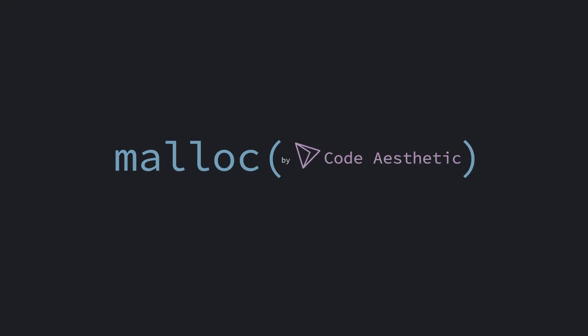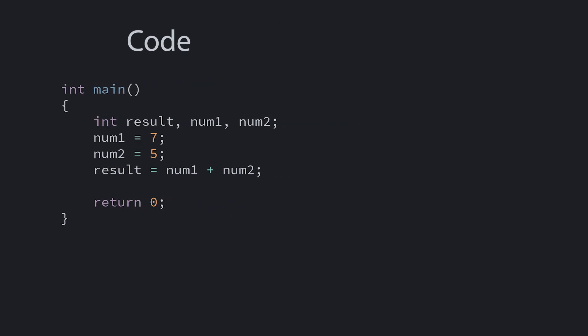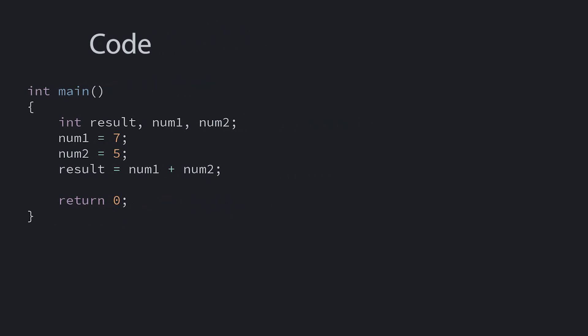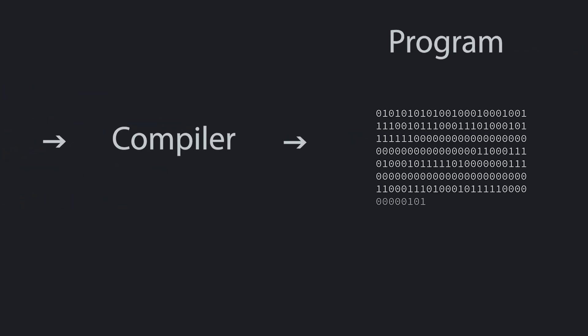Now that you have a text editor and a compiler and you're familiar with the terminal, it's time to write your first program. We discussed how we write programs in something called a programming language. The code is written in the language, then we use the compiler to turn that code into a program that the computer can execute.